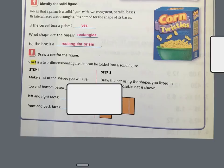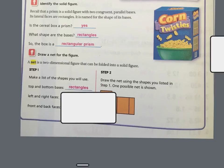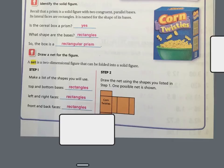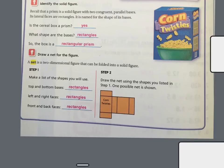So step one says make a list of shapes you will see. The top and bottom we knew were rectangles. The left and right faces, those are also rectangles. And the front and back are rectangles. So step two is to actually draw it. So if you look here, and I have a sample in the classroom that you're going to be looking at.